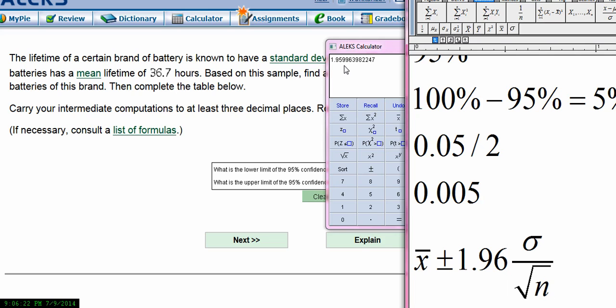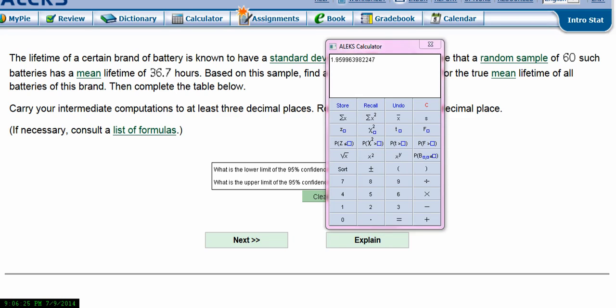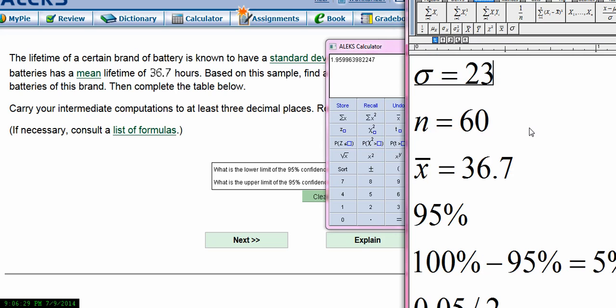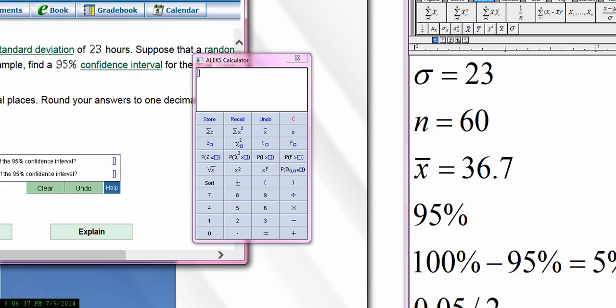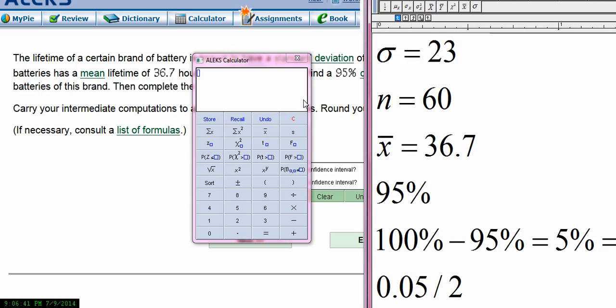So then let's go out to the Alex calculator and then go ahead and do the computation. So the mean was 36.7. I was kind of hoping that we could see both at the same time. Yeah, perfect. Yes, I think you can see it. Okay, cool. Now we can see everything at the same time. So I'm going to put in the 36.7 into the Alex calculator, plus or minus 1.96 times sigma, which was 23, divided by the square root of 60.